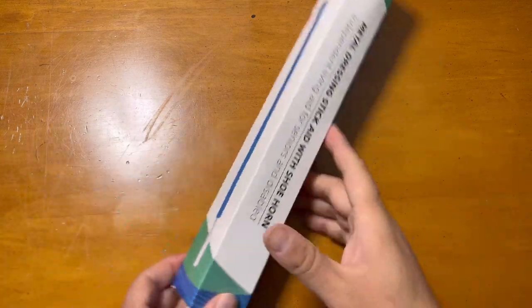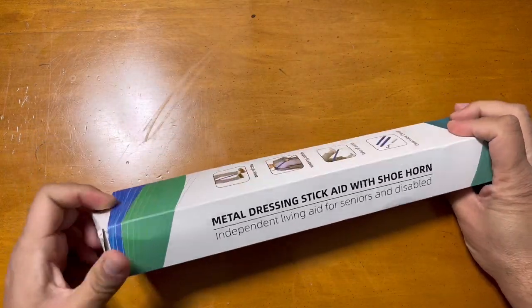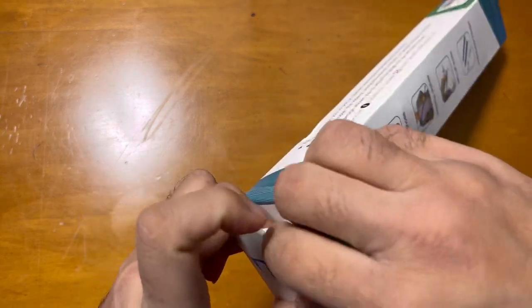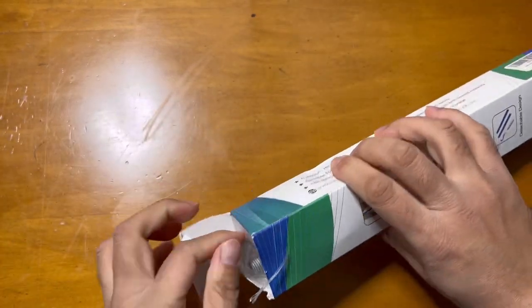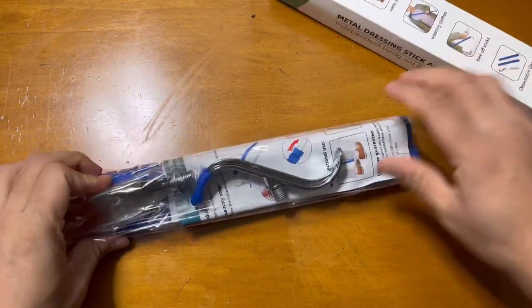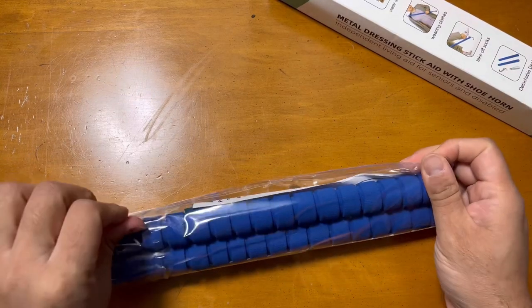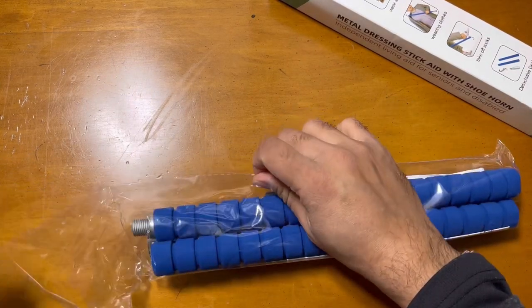Hey guys, I'm showing this shoe helper, the Fenwar - you know, the metal dressing stick and shoe helper thing. You can see it's made of metal and comes with this packaging. You need to assemble it a bit.